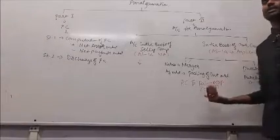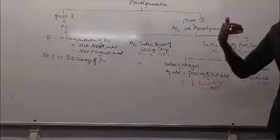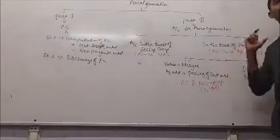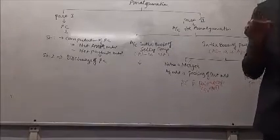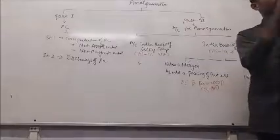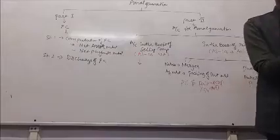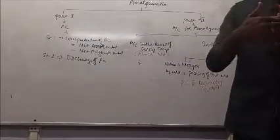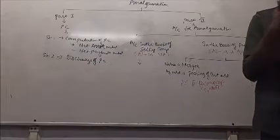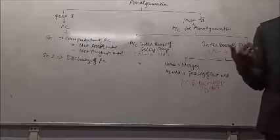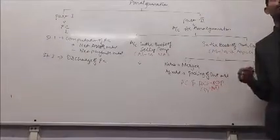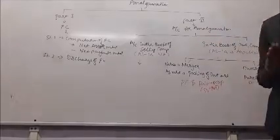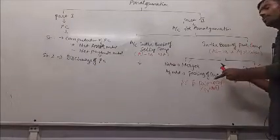Lastly, if the selling company has statutory reserves that must be complied with, an amalgamation adjustment account — a contra account — needs to be created. Entry: amalgamation adjustment account debit to statutory reserves. These are all the entries for the purchase method.